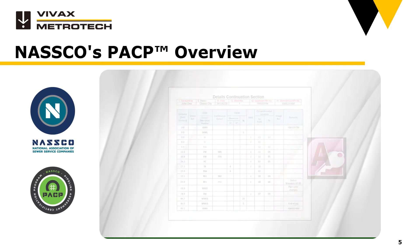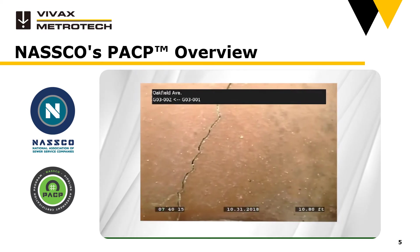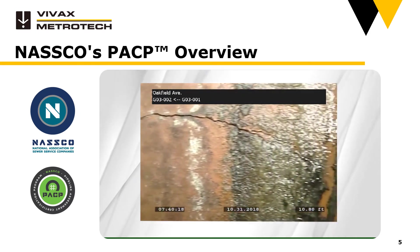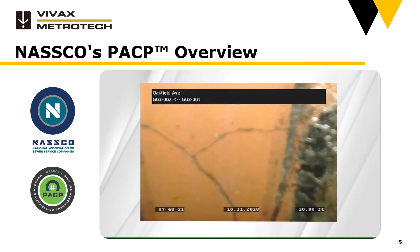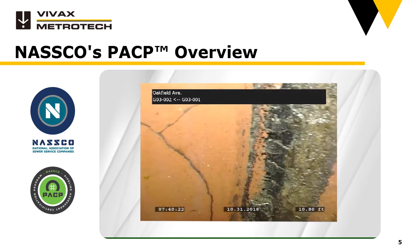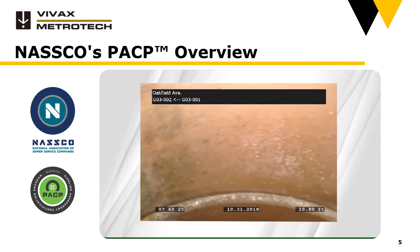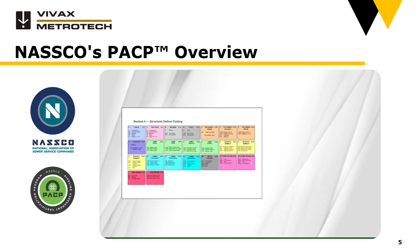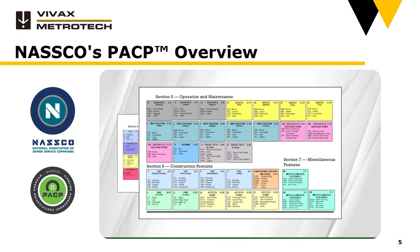The electronic deliverable is an Access database that can be easily incorporated into most municipalities' data management systems, and a video recording that is easily transferable through portable hard drives, DVD, or other electronic media such as FTP sites. Appendix B contains codes that are categorized into four families: structural defects, O&M observations, construction features, and miscellaneous features.